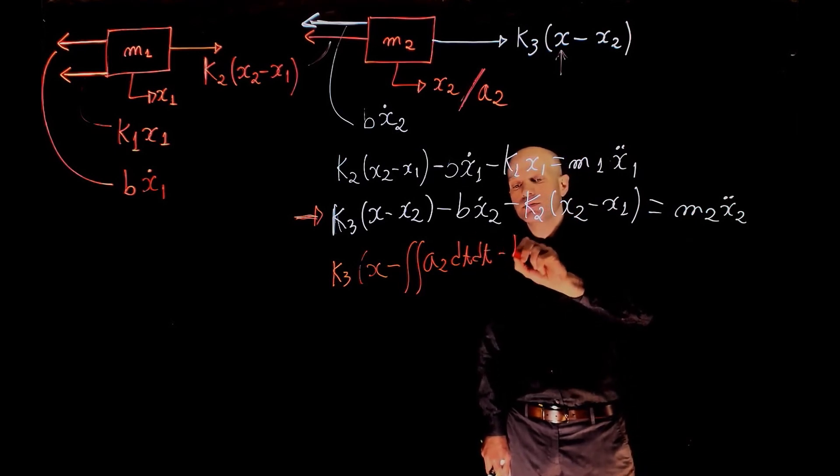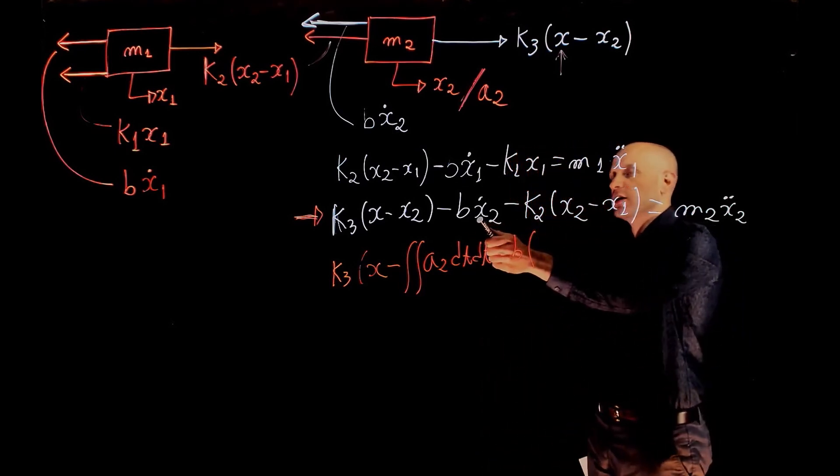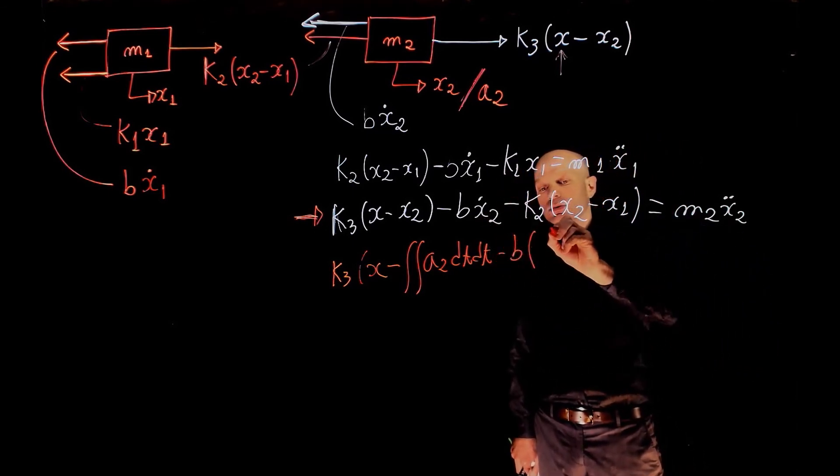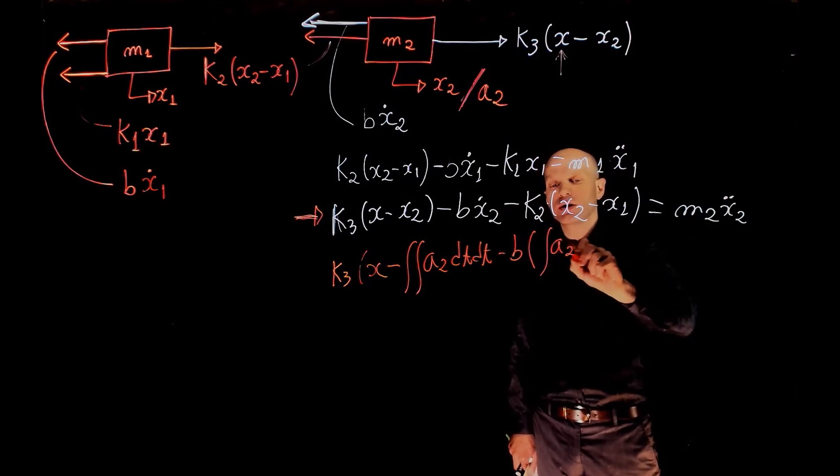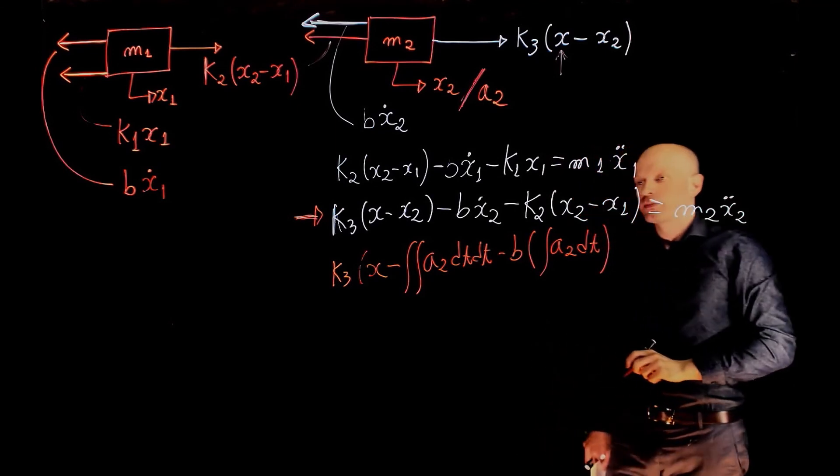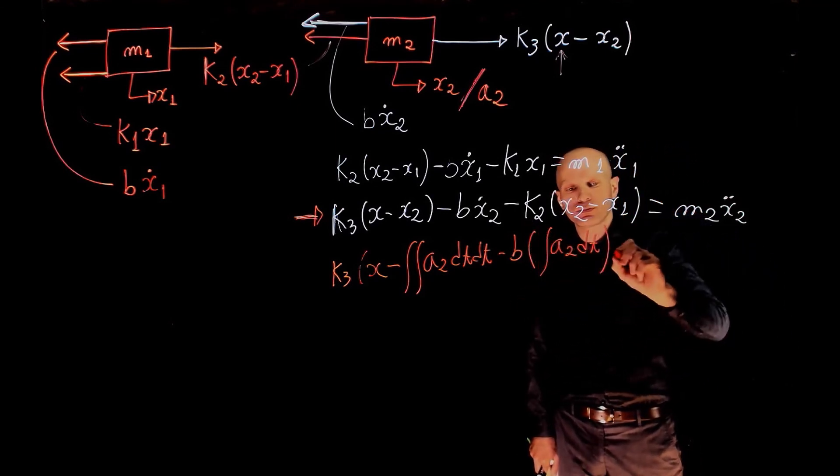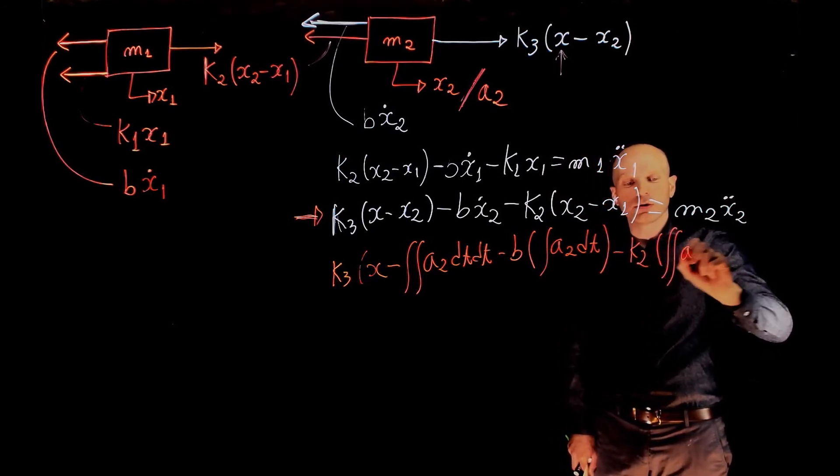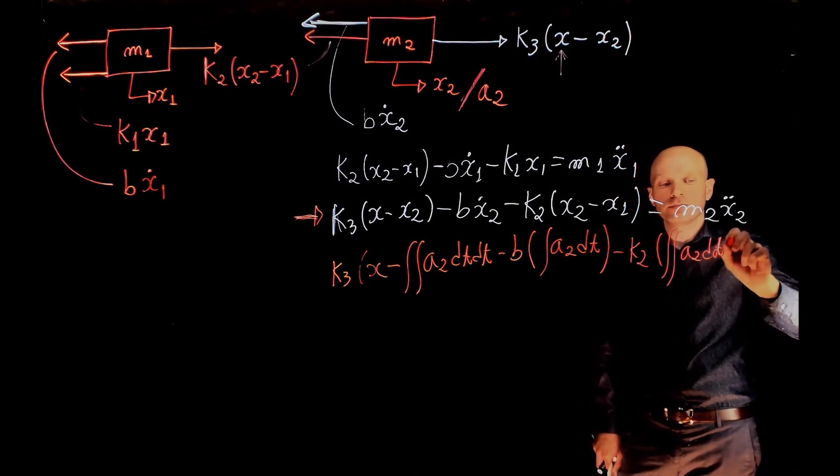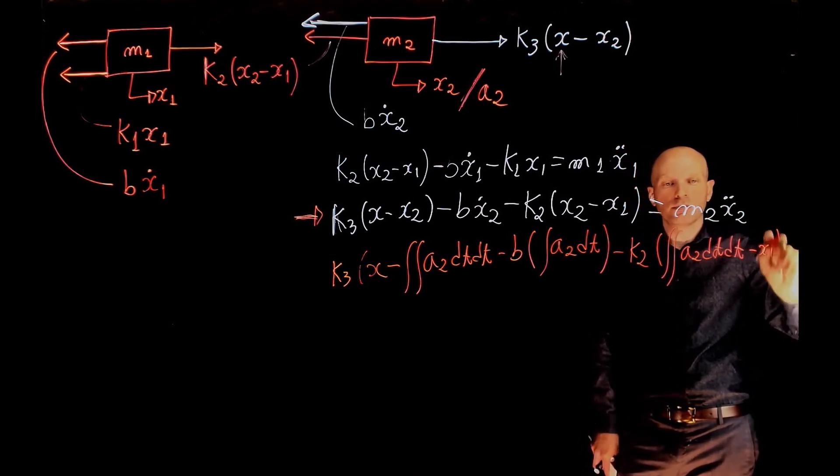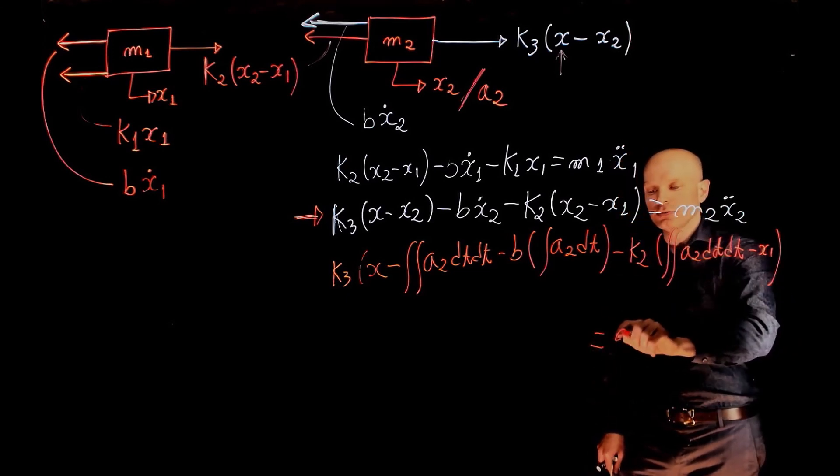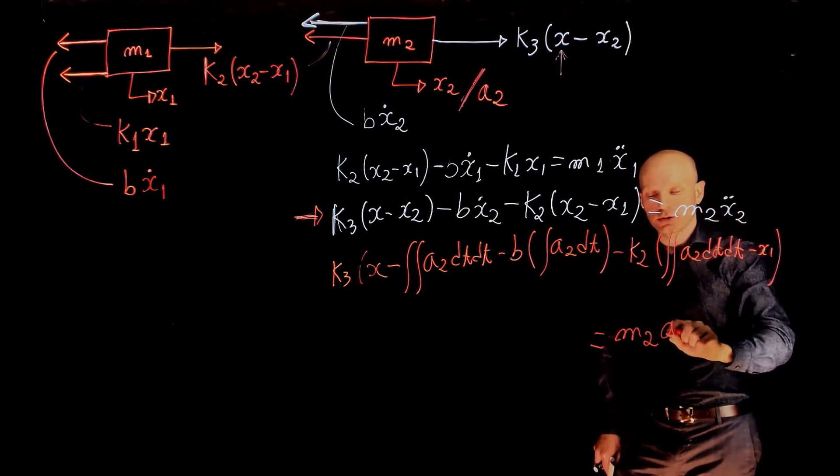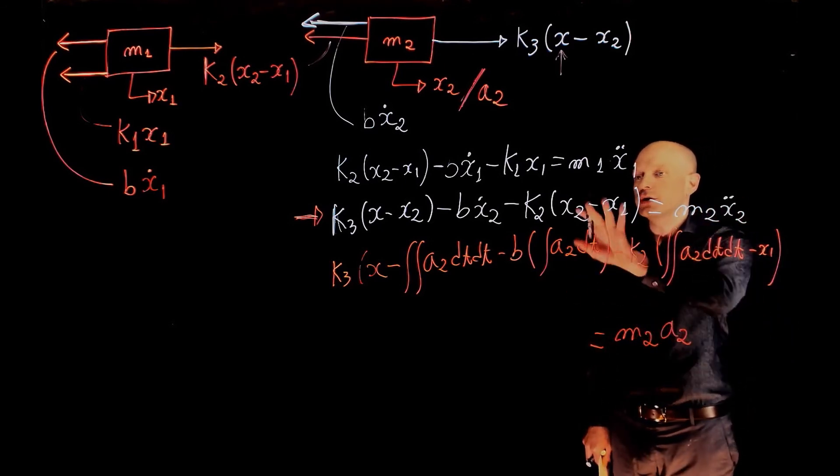Minus b times x2 dot, so this is the speed of mass m2. The relation between the acceleration and speed is, again, one integration. So minus the integral of a2 dt, minus k2 times the double integral of a2 dt, minus x1. And this is equal to m2 times acceleration, x2 double dot, and we call that a2. And this is an alternative way to write the same equation.